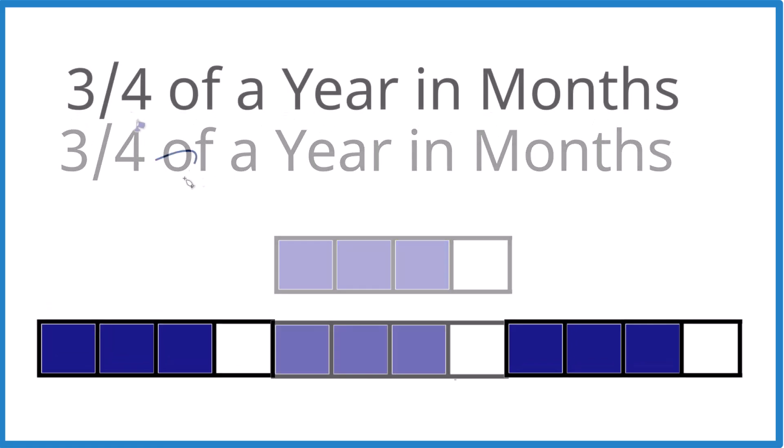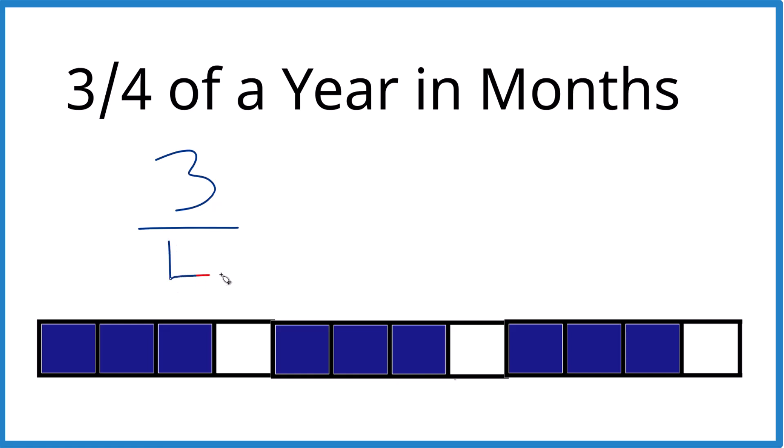Here's another way to do it. We have our three-fourths here, and what we want to know is if we had, instead of three months out of four, how many months out of 12 would that be? So four goes into 12, four times three is 12,